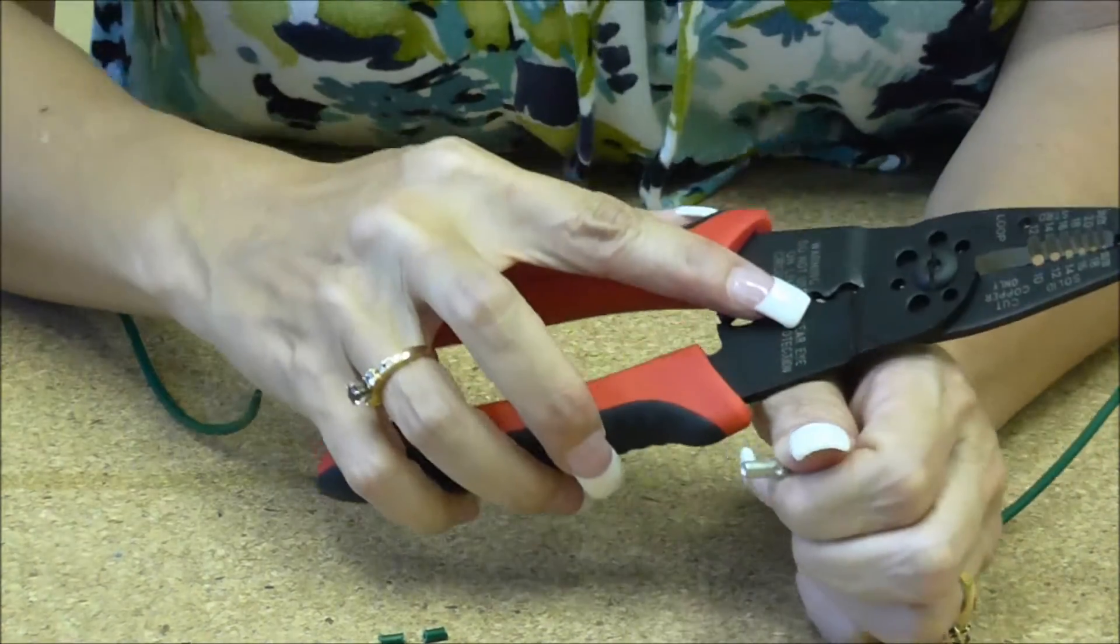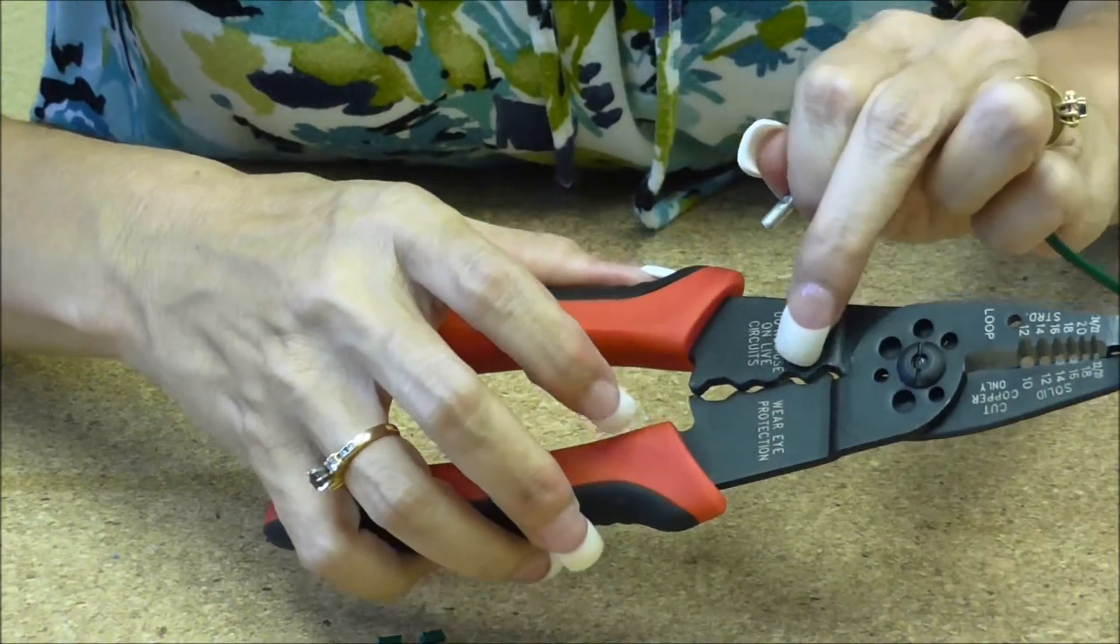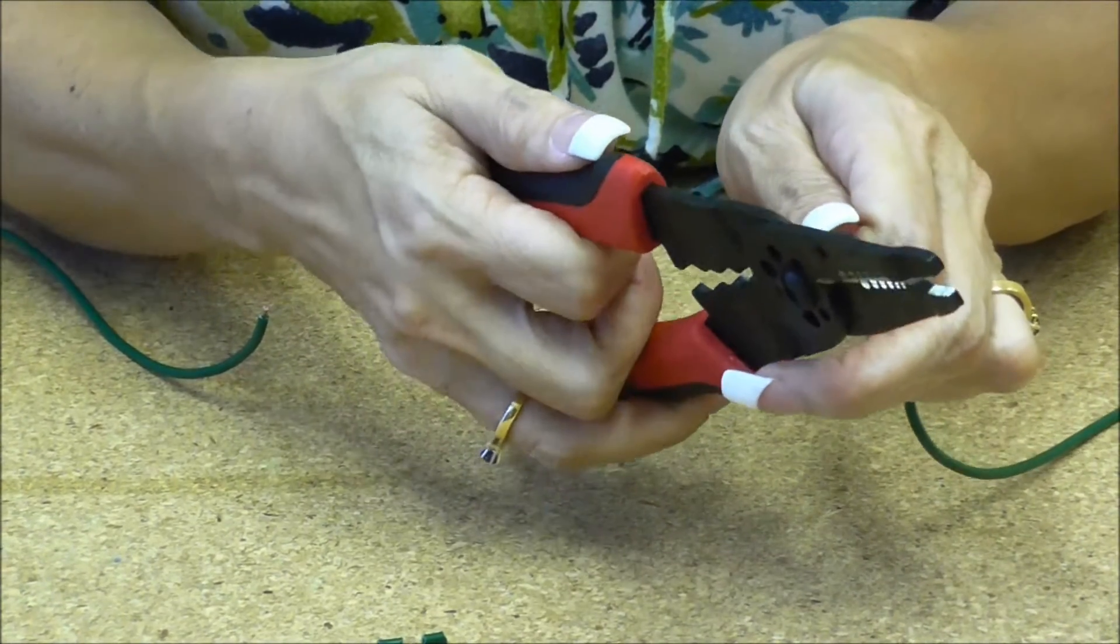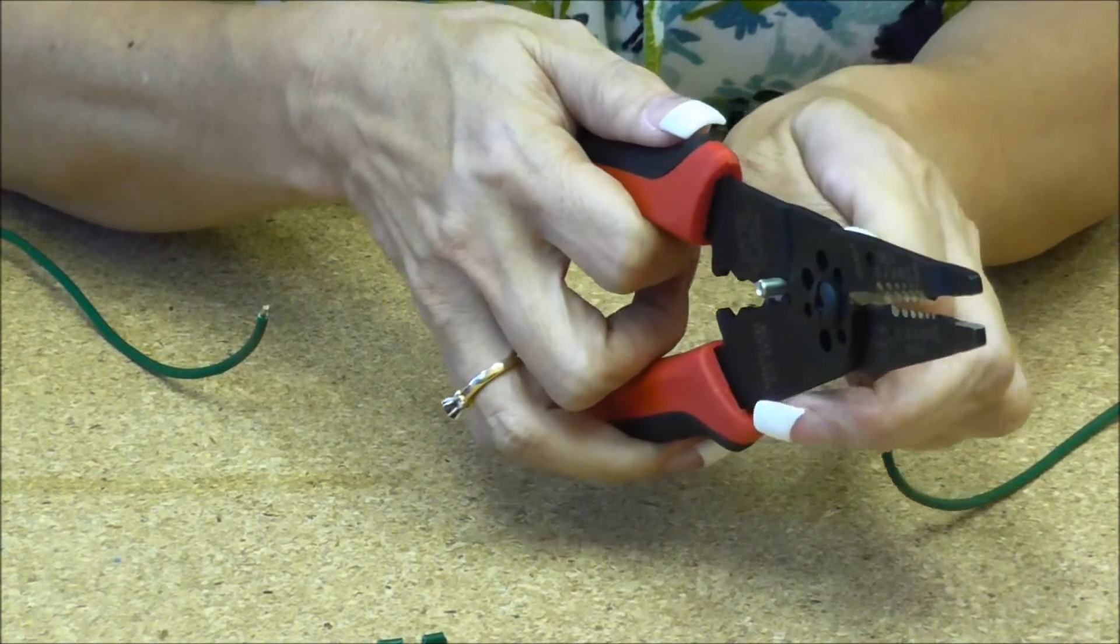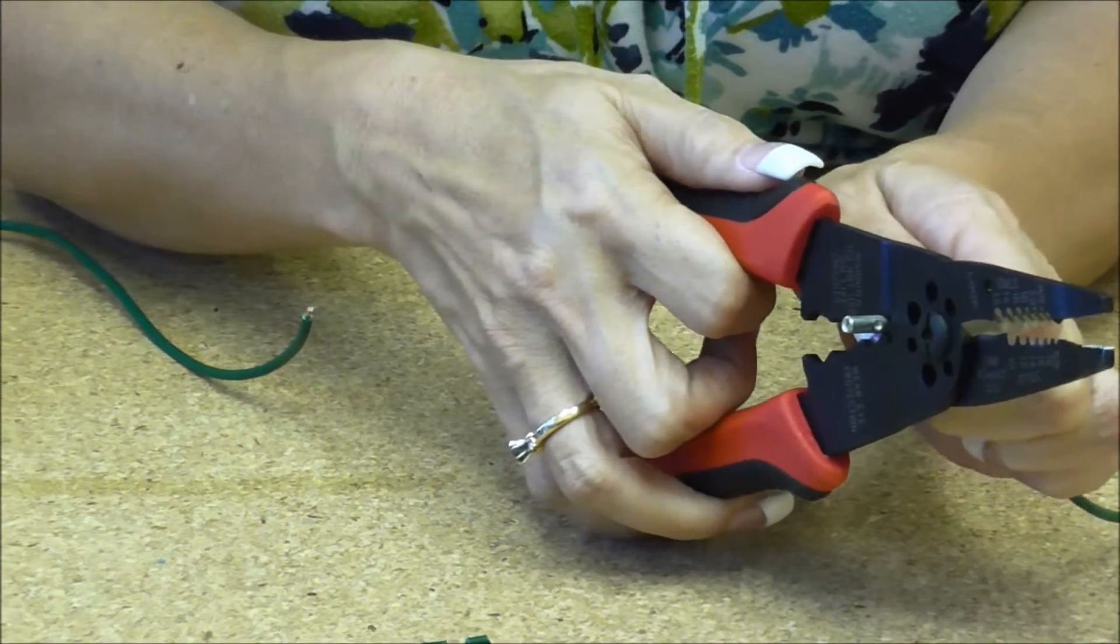When you're looking at your crimpers, you have to look where that bump is coming down. You do not want to crimp that bump down on that seam. You want the bump on your crimper to be on the other side.